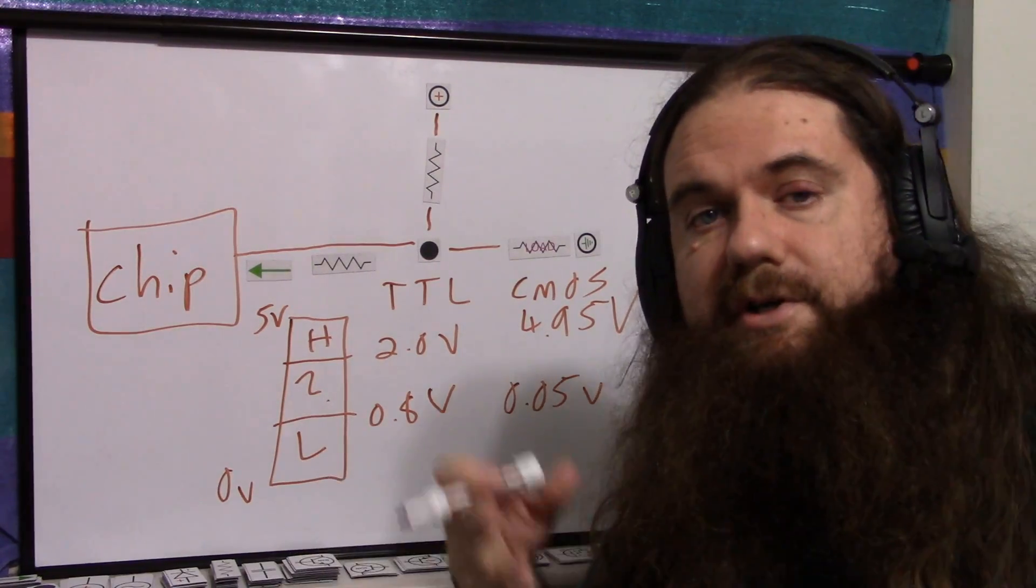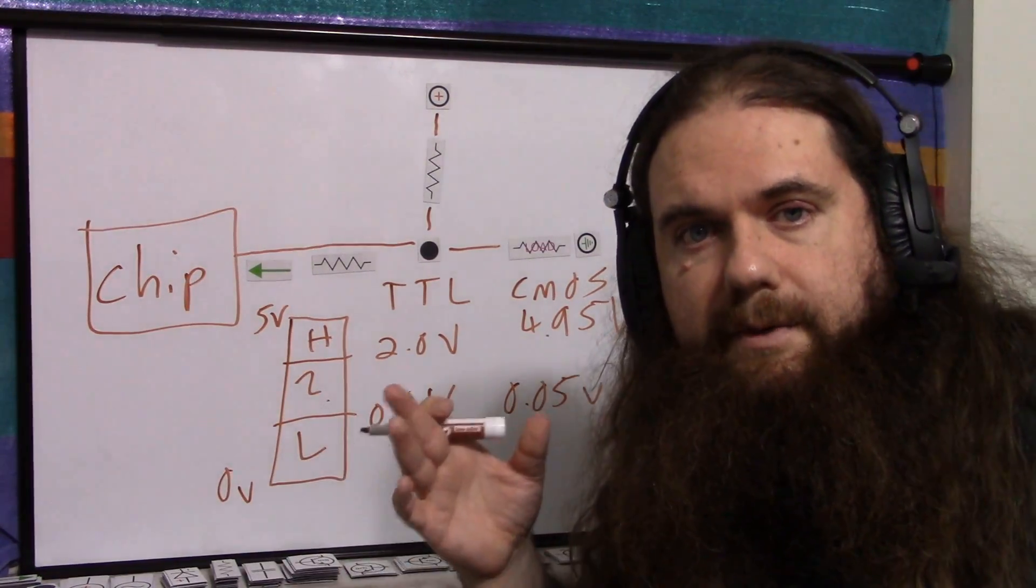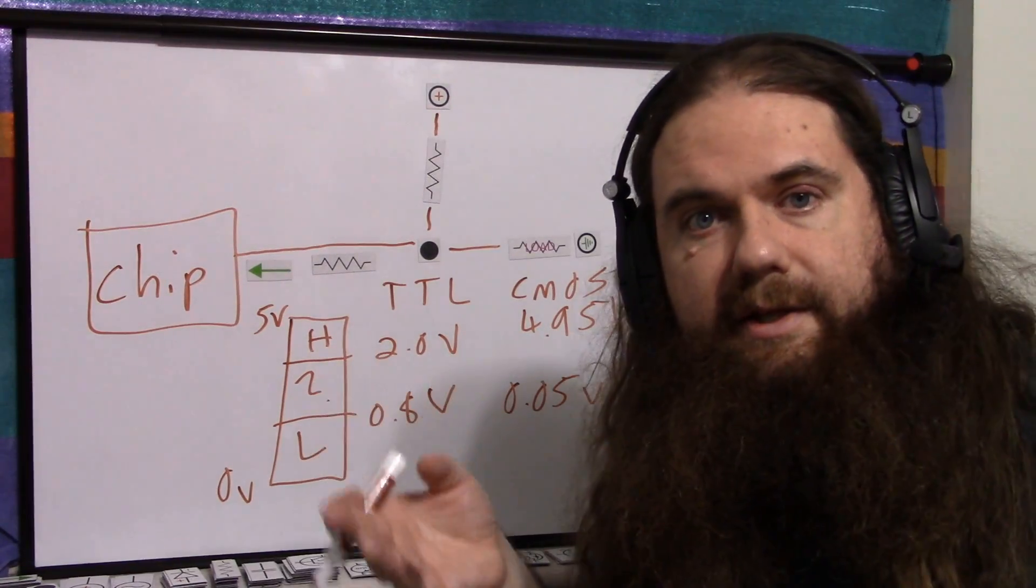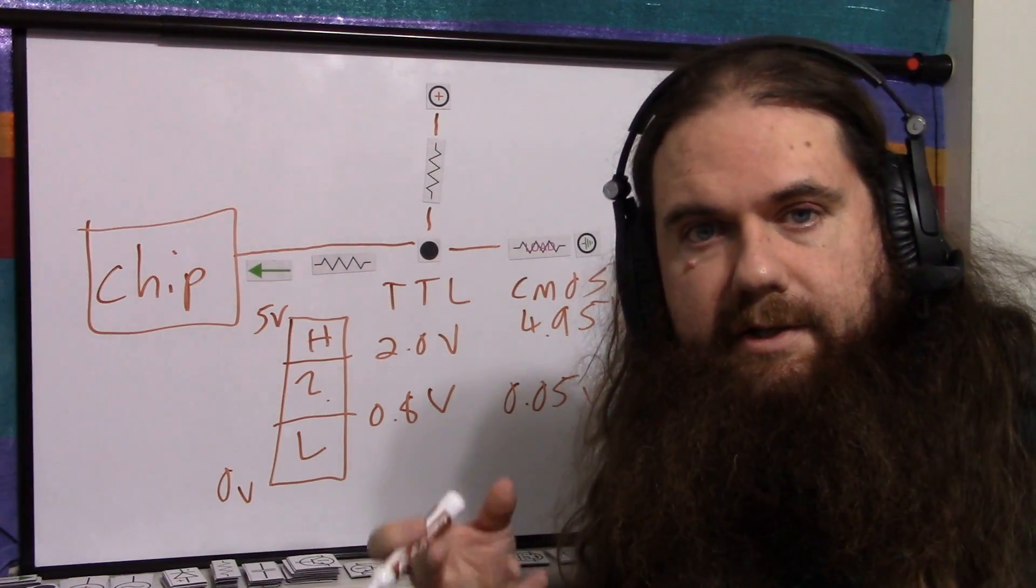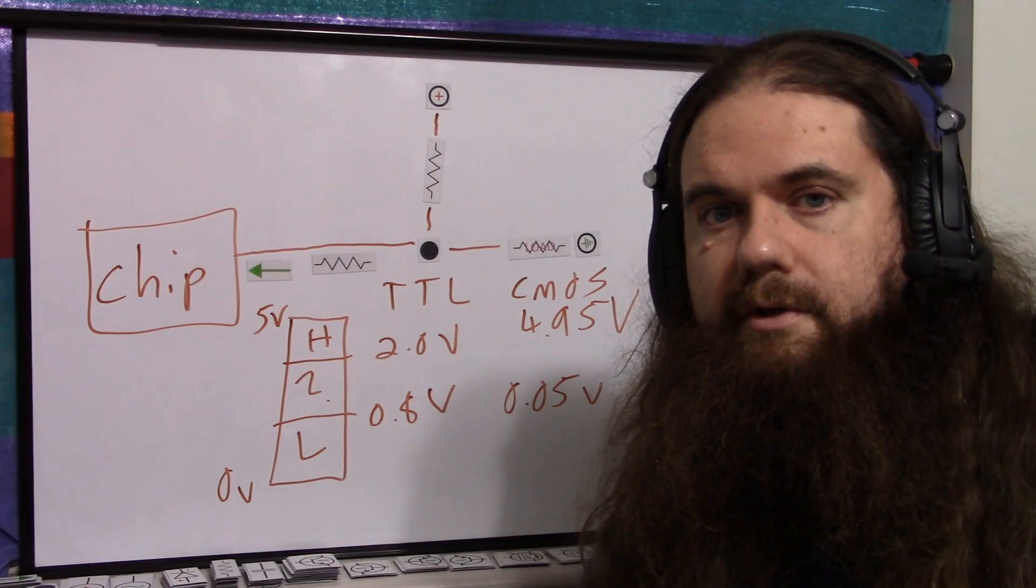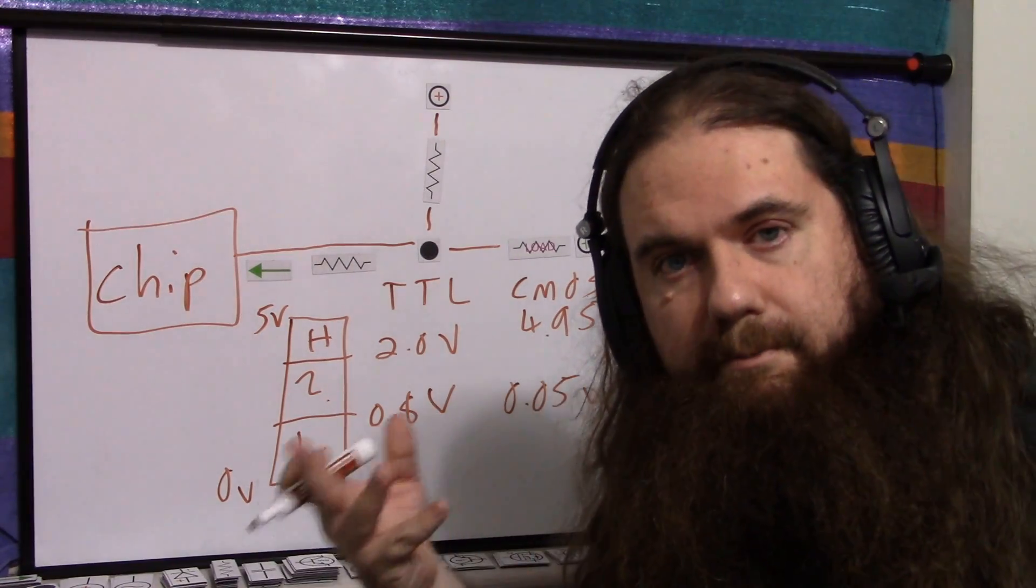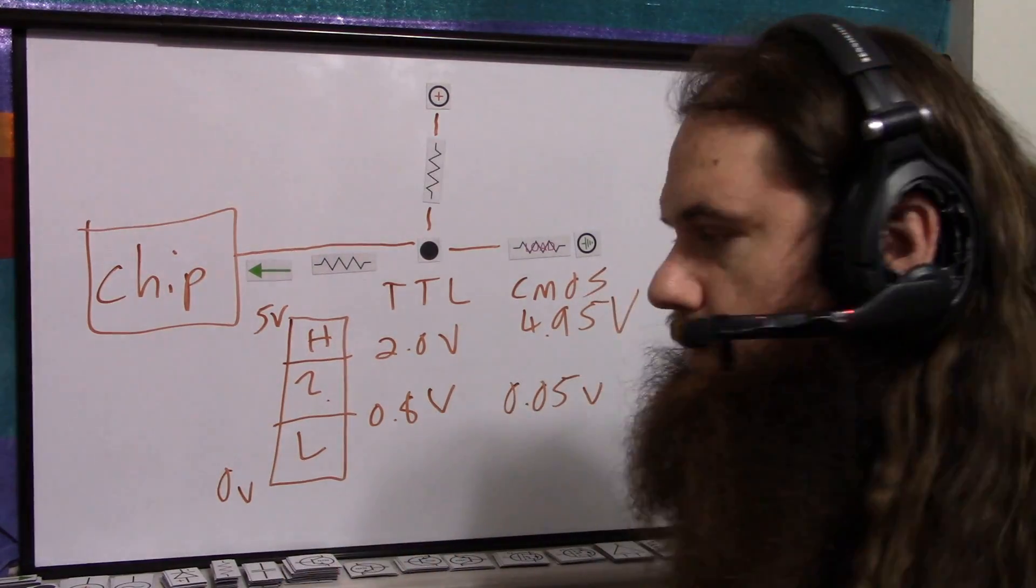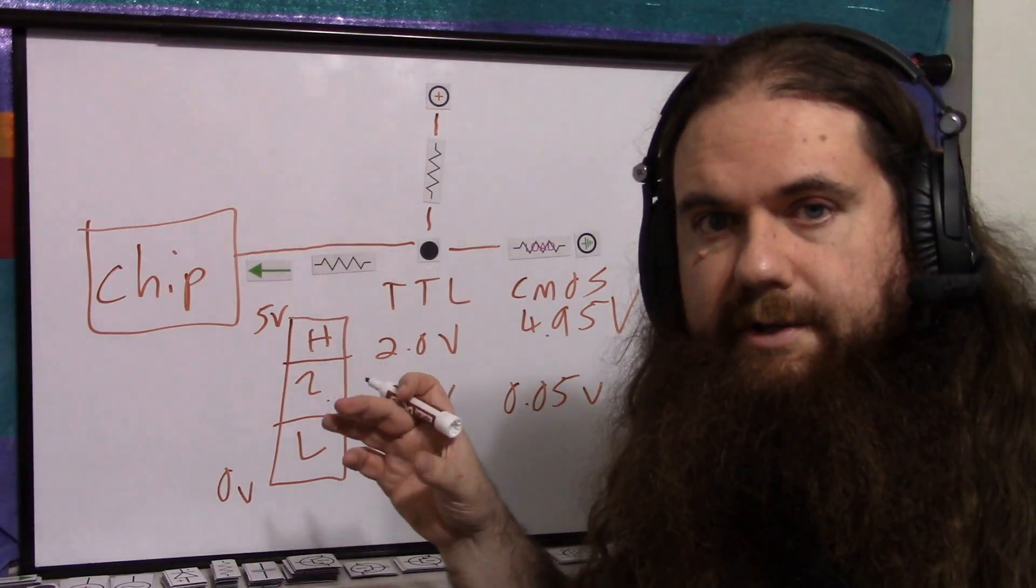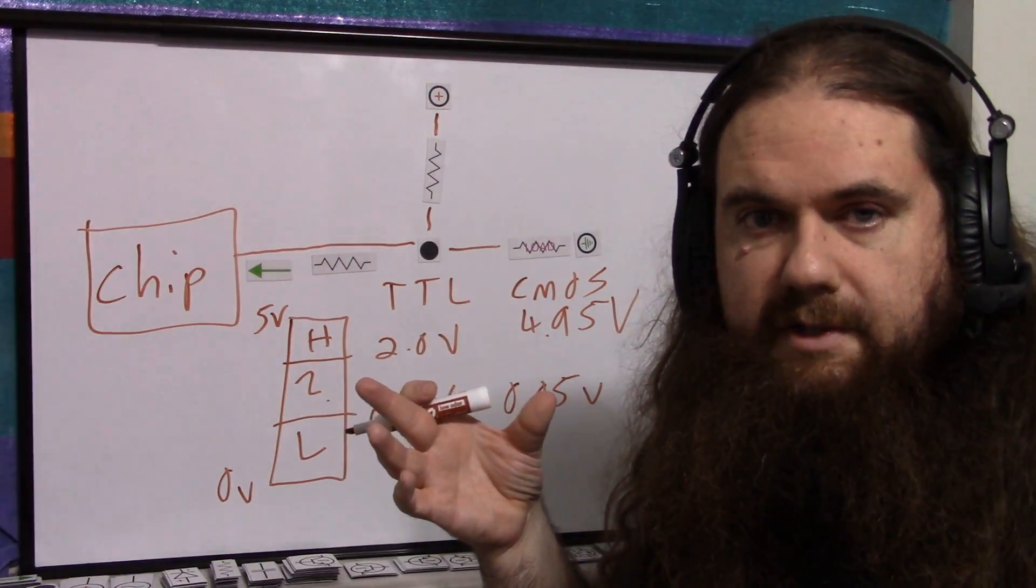most CMOS chips, most chips in general, really, follow the proper policy. When you're designing anything, this includes software. You should be liberal in what you accept, and conservative in what you generate. So you should accept and handle malformed input, but you should be very careful about putting out the correct output. So a CMOS chip is going to basically put out the rails as close as it possibly can.